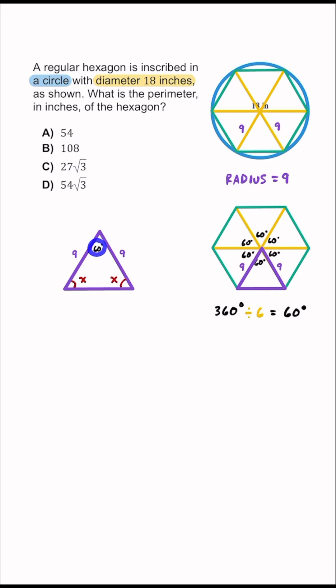Now remember when you add the three interior angles of a triangle that has to equal 180 degrees, so we can go ahead and write the equation of x plus x plus 60 is equal to 180 degrees. Combining like terms, we can write 2x plus 60 is equal to 180.